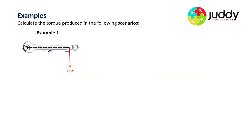Let's try some simple examples. Example one: find the torque. We have a radius of 0.3 meters — make sure not to leave units in centimeters. The force is 10 newtons and it's perpendicular. Using the simple equation, torque equals radius times force: 0.3 times 10 gives 3 newton meters.